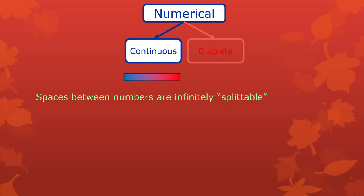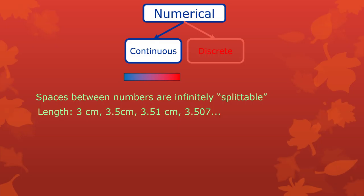A numerical continuous scale is a scale where the numbers have spaces between them that are infinitely divisible — infinitely splittable into smaller spaces. Any physical measurements work like this. If you're measuring the length of worms, with a basic ruler you might say a worm is 3 centimeters. With a more precise ruler you might notice it's 3.5. With laser measurement it might be 3.51 centimeters, or even 3.507. You can get more and more precise by dividing the spaces between the numbers.